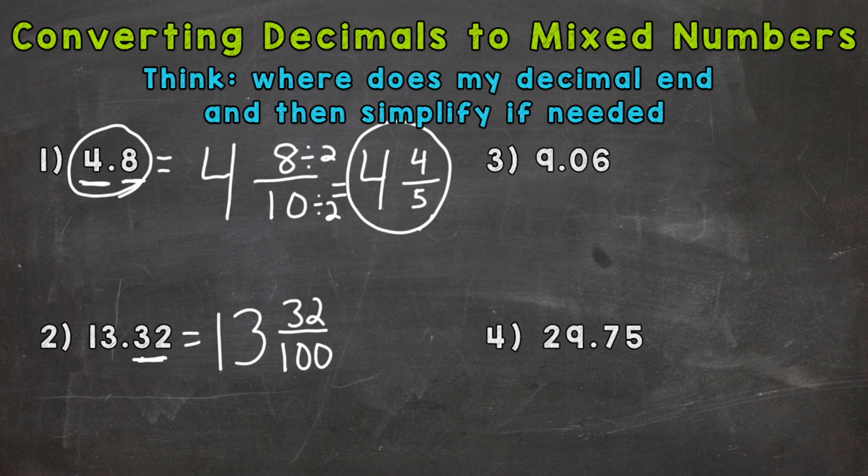And again we always look to simplify when we have fractions and we keep our whole number the same so it is a 13. So any common factors between 32 and 100? Yes we can start breaking it down and divide each by two. They're both even. Or there's a greater common factor than two. We can divide both of them by four. And we get 32 divided by four is eight. And 100 divided by four is 25. So we get 13 and 8 twenty-fifths.